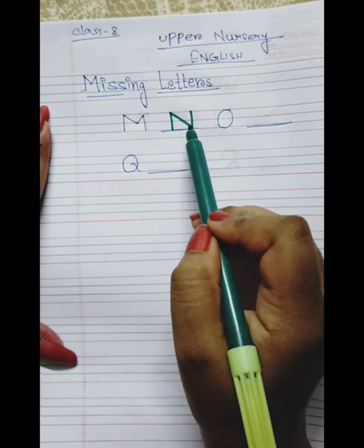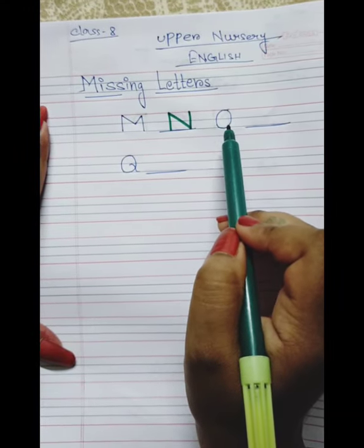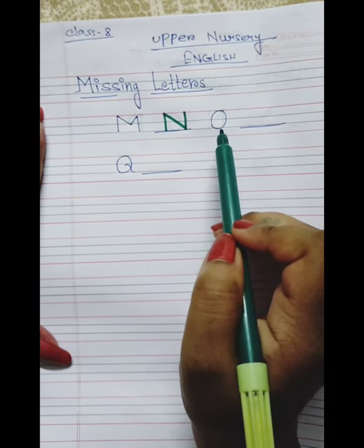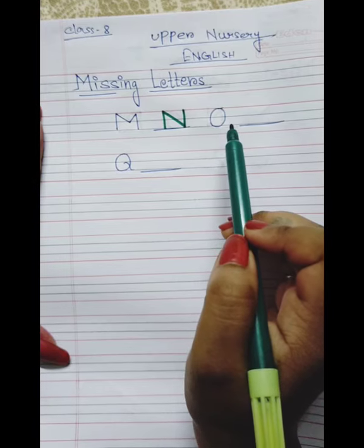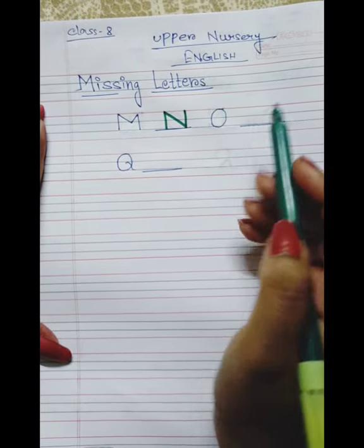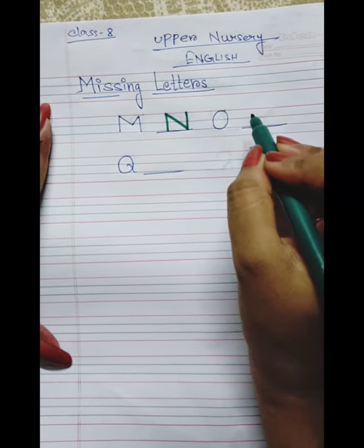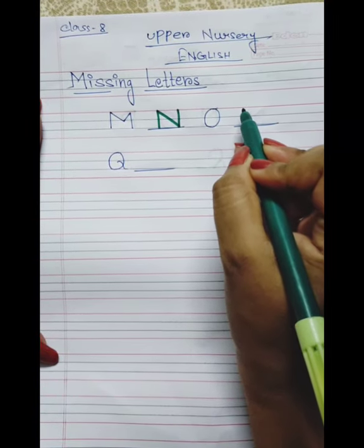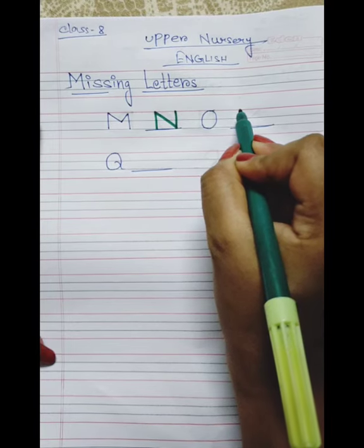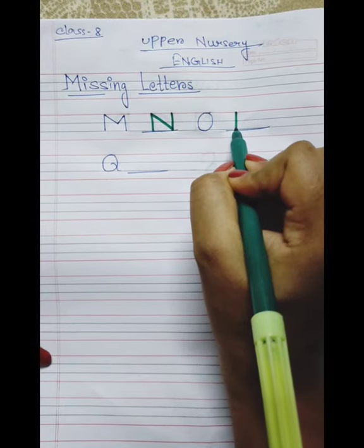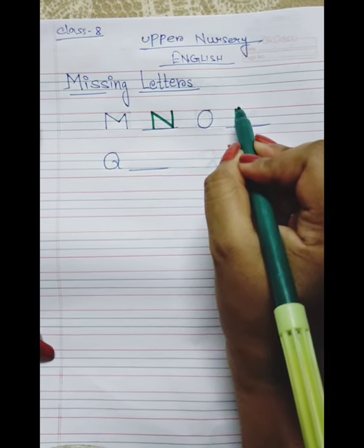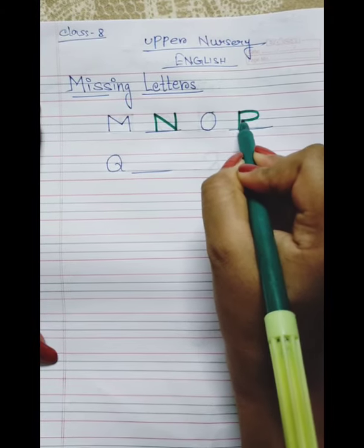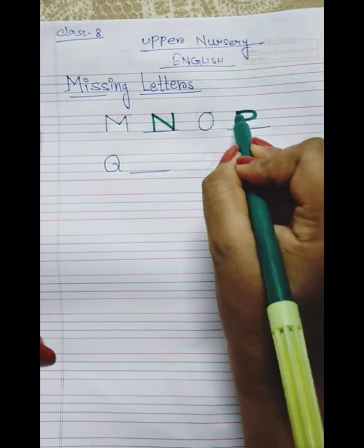Very good. After N comes O. O is the example of a curve. Then after O comes P. Very good! So how to write P — draw a straight standing line, drag it from up towards down, then make a semicircle.